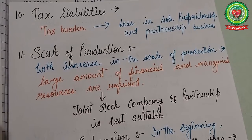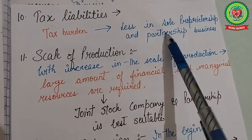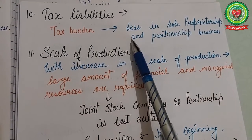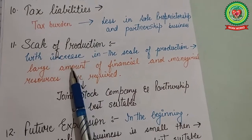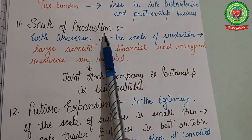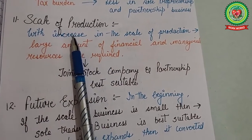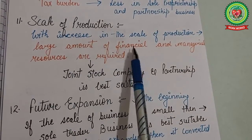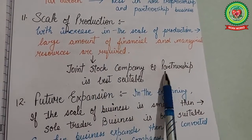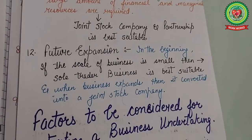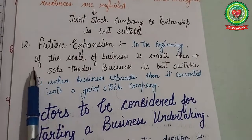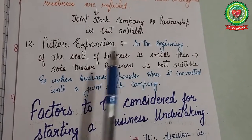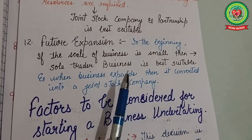The next factor is tax liabilities. The tax burden is less in sole proprietorship and partnership businesses compared to the company form. For scale of operation, a sole trader can easily meet the financial and managerial requirements of a small-scale business, but with increase in scale, large financial and managerial resources are required, making joint stock company and partnership most suitable. For future expansion, if the business starts small, sole trade is best, but when it expands, it can be converted into a joint stock company.